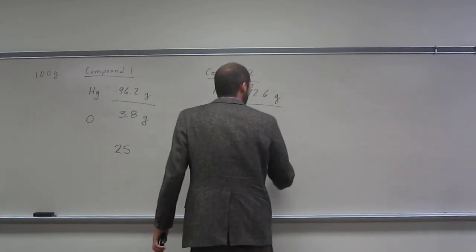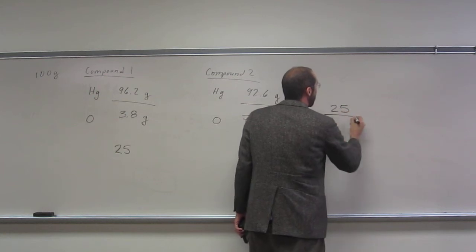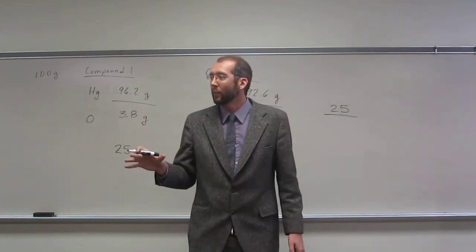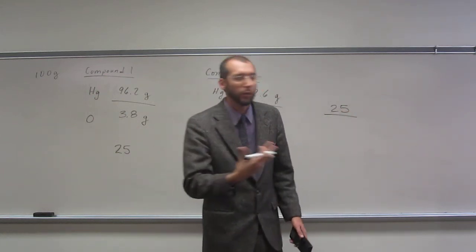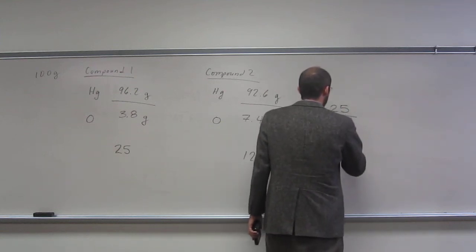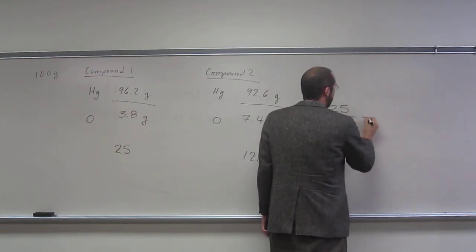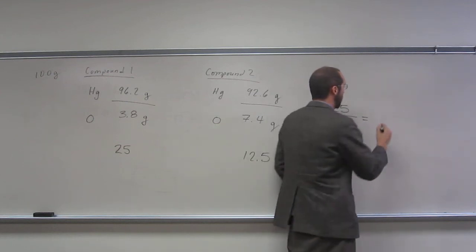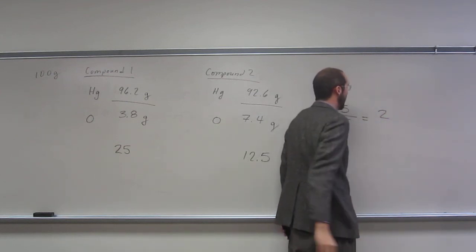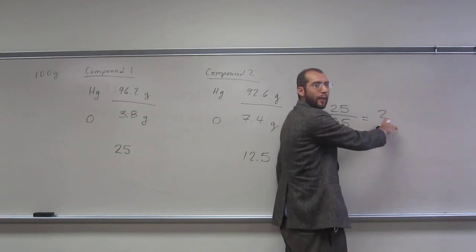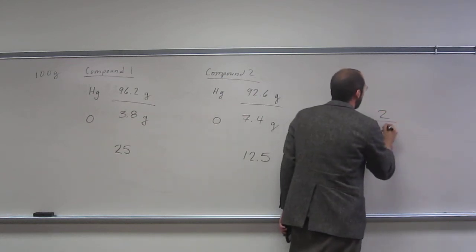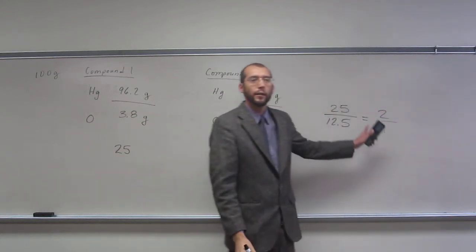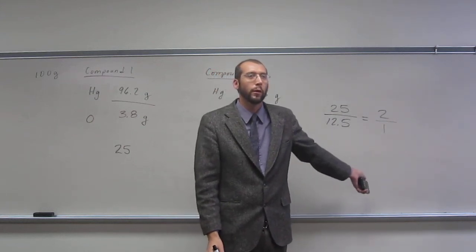What you can do is take 25. Remember, I really like to put the bigger number on top most of the time. So let's just do that, 25 over 12.5. When we do that, it gives us, we put it into our calculator, it's going to give us 2, like that. But remember, anything is over 1. So 2 to 1, right? Is that the ratio of two simple whole numbers?